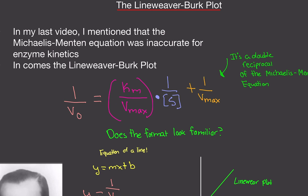In my last video, I mentioned that the Michaelis-Menten equation was actually fairly inaccurate in calculating enzyme kinetics like Km and Vmax. Here comes the Lineweaver-Burk plot. Lineweaver and Burk are two people who came together, looked at the Michaelis-Menten equation, and said they could do it better. So that's what they did.